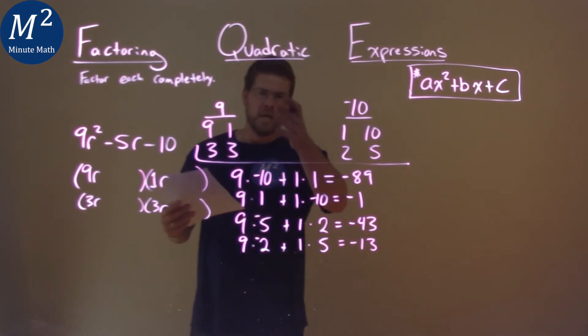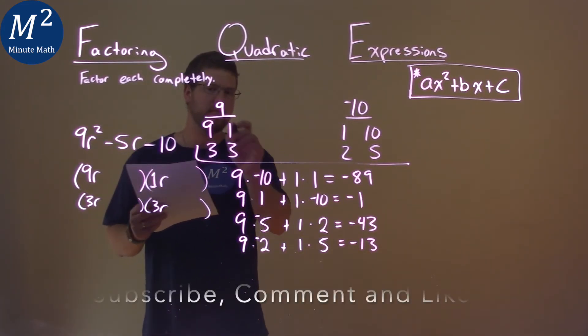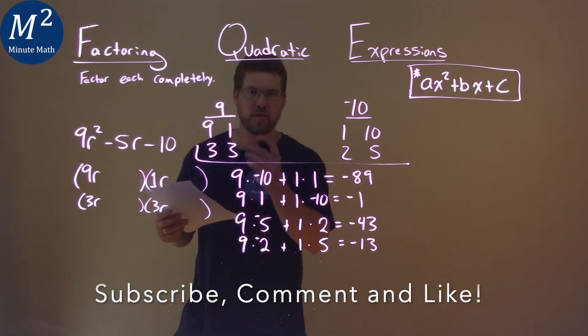We've kind of tested all the options smartly with 9 and 1 being the first two values. Let's try the 3 and the 3.